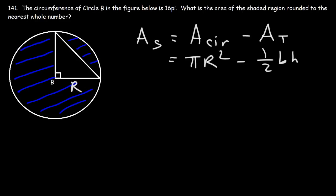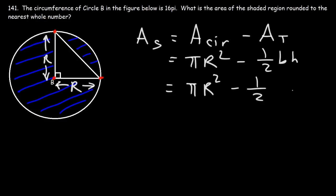Notice that the base of the triangle is the radius of the circle, and the height of the triangle is also the radius. The radius is the distance between the center and any point on the circle, so we replace B and H with R, giving us one-half R times R, or one-half R squared.